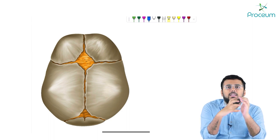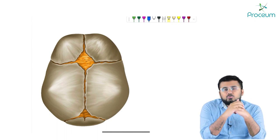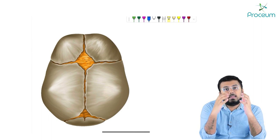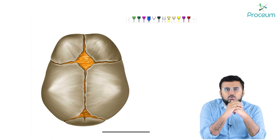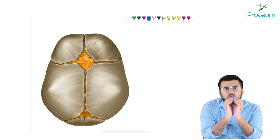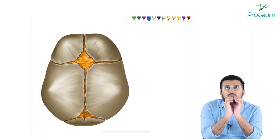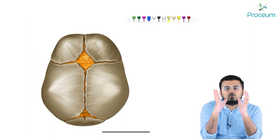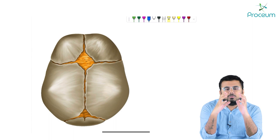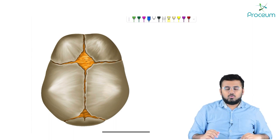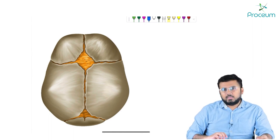When sutures are completely closed, brain development will not happen - the brain will not increase in size or will remain the same size. So we need sutures because they allow the growth of the brain along with the growth of the skull bone. The brain pushes the cranial bones outward, allowing flexible stretching and proper head circumference development.